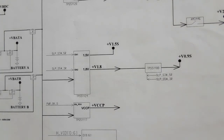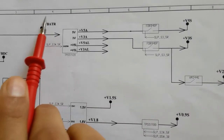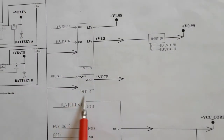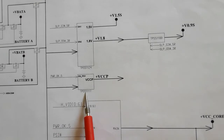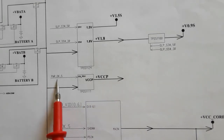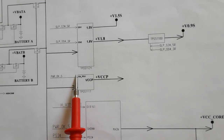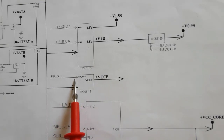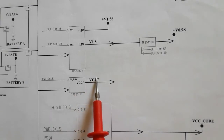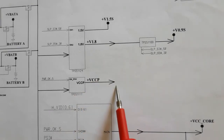The VBAT will also be applied to the next IC, the TPS51117. This is the plus VCCP power management IC. Here we also have an enable signal — power okay. The enable signal with the plus VBAT will be applied to the IC, and the IC will give plus VCCP to all chips, including the processor.